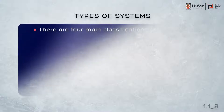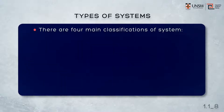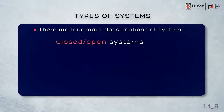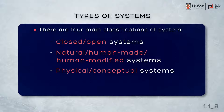There are numerous ways to classify systems. Here we identify the four main types in order to be clear as to which type of system we refer to in systems engineering, and therefore in the remainder of this course. There are closed or open systems. There are natural, human-made or human-modified systems. There are physical or conceptual systems. There are precedented or unprecedented systems. Let's look at each of those a little more closely.